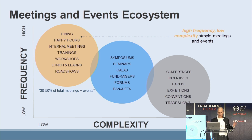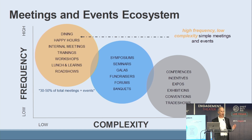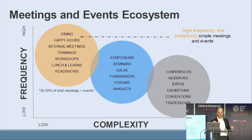The first bucket is large, complex events that don't happen very often — annual conferences, incentives, expos, exhibitions, conventions, trade shows. Then there's the middle tier: symposiums, seminars, galas, fundraisers, forums. And then there are small events that happen all the time: dinner events, happy hours, internal meetings, trainings, workshops, lunch-and-learns, road shows. For this discussion, we're focused on these low-complexity events that happen frequently.